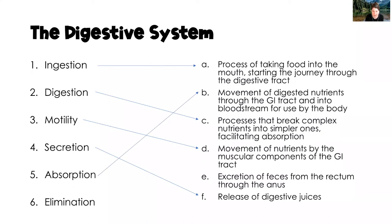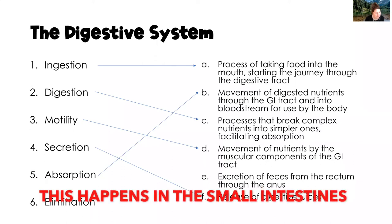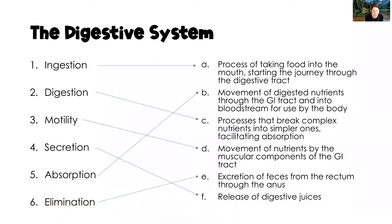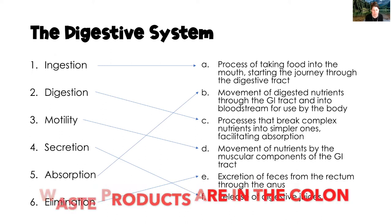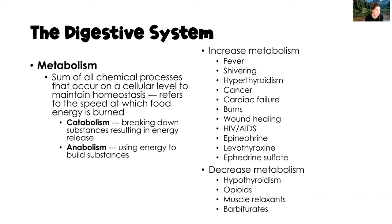Absorption is the movement of digested nutrients through the GI tract and into the bloodstream for use by the body. Elimination is the excretion of waste products or feces from the rectum through the anus. Metabolism is the sum of all chemical processes that occur on a cellular level, done to maintain homeostasis.